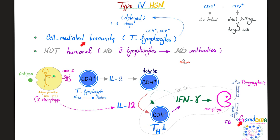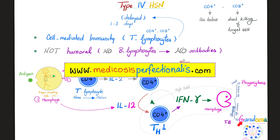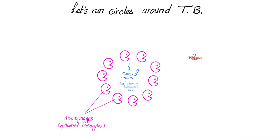Type 4 is cell-mediated immunity. T lymphocytes, CD4 cells, especially TH1, secrete interferon-gamma to activate macrophages. Low virulence organism: phagocytosis. High virulence organism: make a granuloma — such as tuberculosis, histoplasmosis, blastomycosis, coccidioidomycosis, or sarcoidosis. In the case of sarcoidosis, the granuloma is not against a foreign invader. If you wish to download these colorful notes, go to medicosisperfectionist.com.